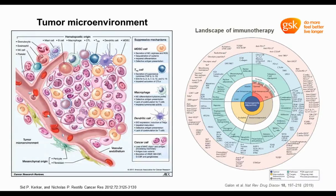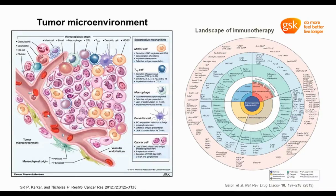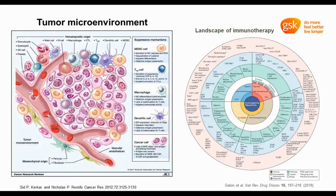One example of targeting the tumor microenvironment is the success of immune checkpoint inhibitors. This map shows the landscape of current immunotherapy. On the outermost cycle, there are treatments that have been approved or are under active clinical development — some very well known, like the PD-1, PD-L1, and CTLA-4 monoclonal antibodies — which have been shown to be effective for multiple cancer types. The inner blue and green cycles show their respective targets, pathways, and mechanisms of action. Clinical outcomes are significantly affected by the immune status of the tumor, based on the infiltrated immune cell type, density, location, and function.